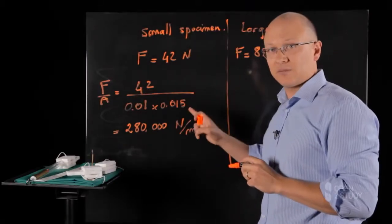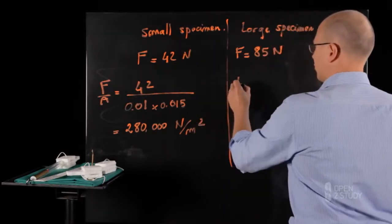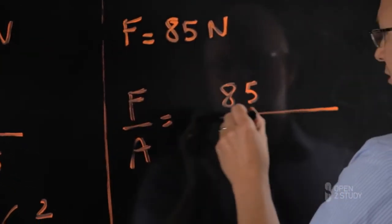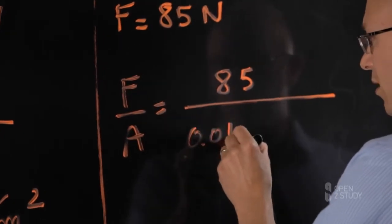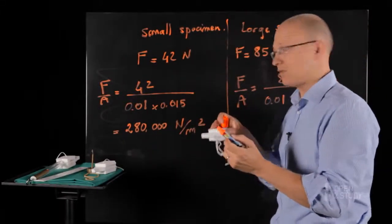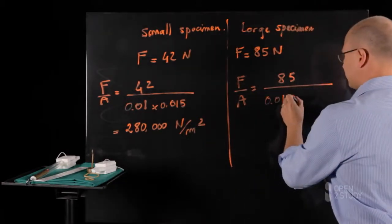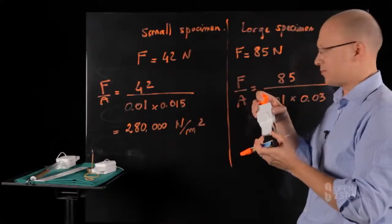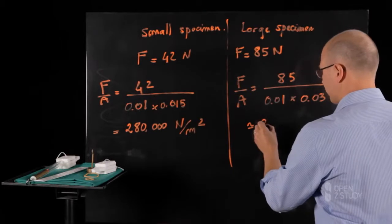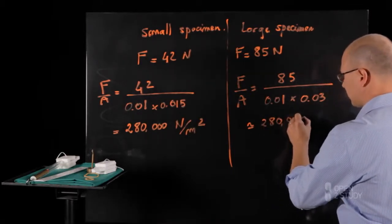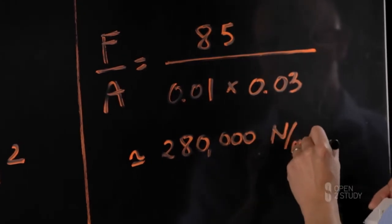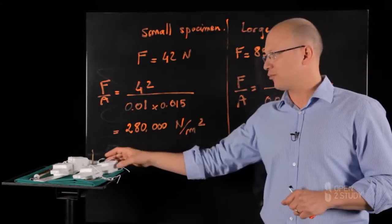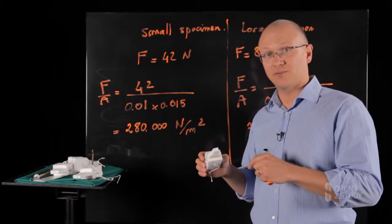Now let's do the same calculation for the large specimen. We now have F over A equal to 85 divided by 0.01, which is, again, the thickness of the specimen, times 0.03, which is the width of the specimen. And that gives us about 280,000 newtons per square meters. So we now see that the two numbers do match. We've managed to quantify the resistance of the polystyrene, regardless of the geometry of the specimen.